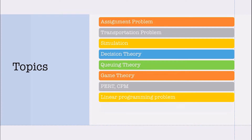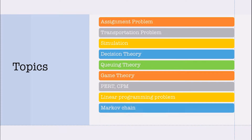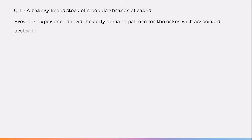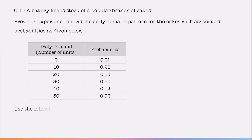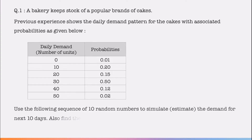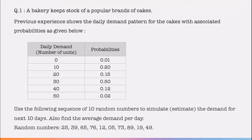Let's start our main topic. This is question number one of simulation. A bakery kept stock of a popular brand of cakes. Previous experience shows the daily demand pattern for the cakes with associated probabilities. We have a daily demand and probabilities are given, and we have to use the ten random numbers as mentioned below.